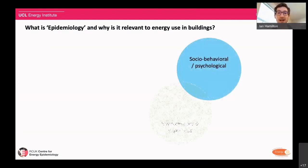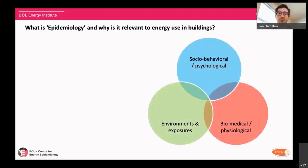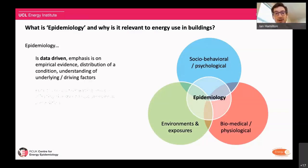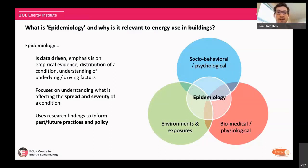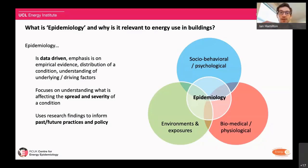Epidemiology is the study of populations, which have a sphere around, for example, the social behavioral, the psychological environments and exposures, and the biomedical and physiological system — these three intersecting areas help create the world around what epidemiology studies. It is data-driven, very focused on empirical evidence and observation, and wants to understand the spread and severity of a condition. Most importantly, this research needs to inform both understanding of our past activities and the prospect for the future.